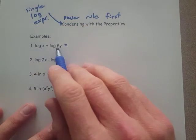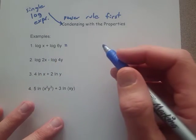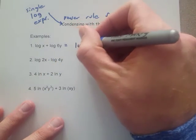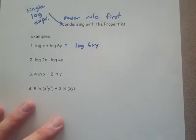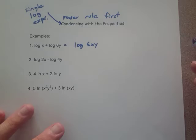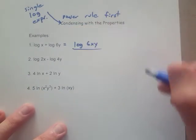So if we have plus, that corresponds to multiplication, and so this can just be turned into log of 6xy, or write them in any order that you want to, but that's really all there is to it on this one.